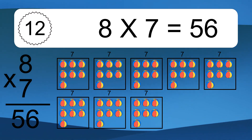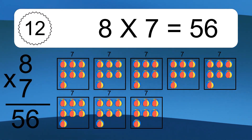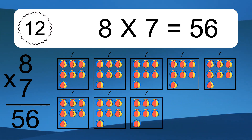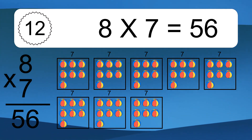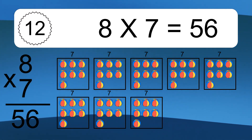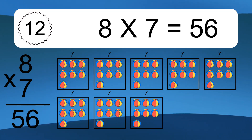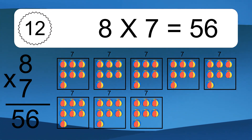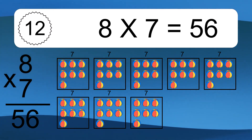8 times 7 equals what? We have 8 boxes, and each box has 7 colorful balls inside. If you count all the balls in all the boxes together, you will have 8 times 7 balls. This equals 56 balls.